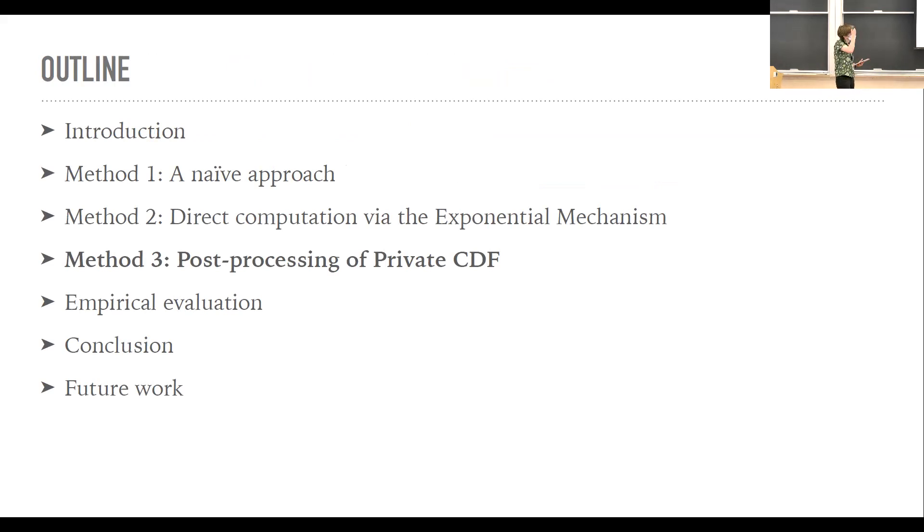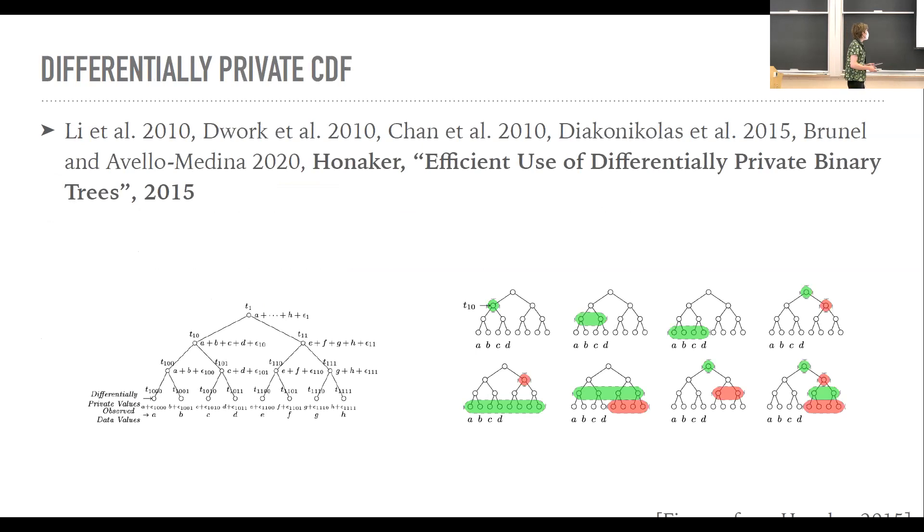So this is a nice method, but like many differential private things, it's also a black box. So we thought about this other method where instead you post process private CDF to get some confidence intervals for the median out of that. And that's nice because you get the whole CDF out of it. But we thought, okay, this is so much more information that there's no way that it will possibly do very well.